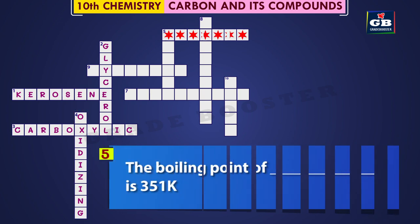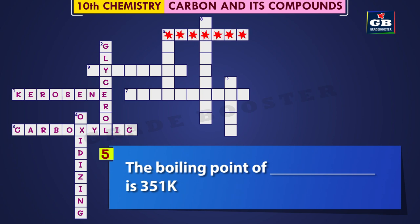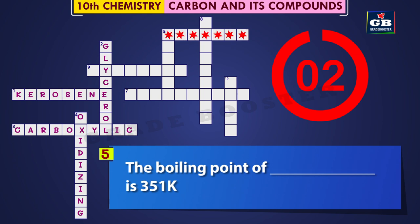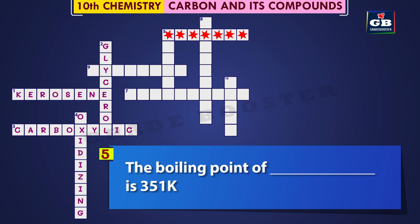The boiling point of dash is 351 K. Do you know the answer? The boiling point of ethanol is 351 K.